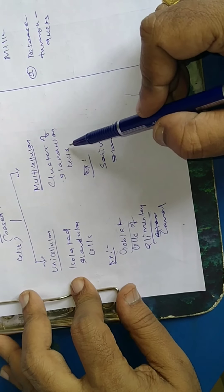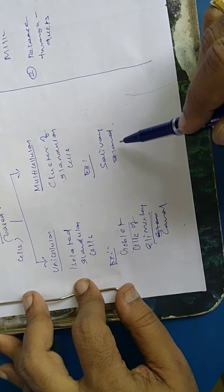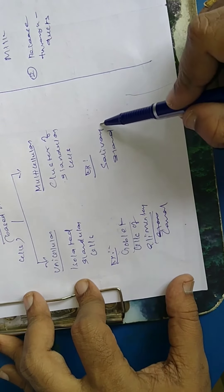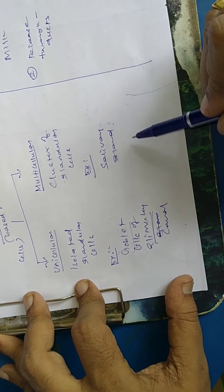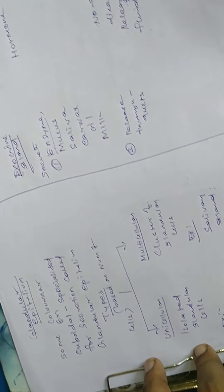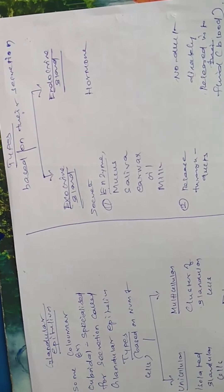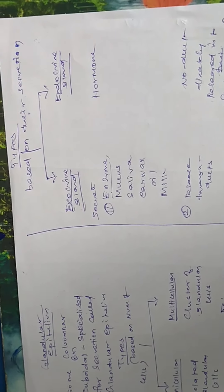Examples of multicellular glandular epithelium: salivary gland, sweat gland, etc. Based on the secretory types, there are two types of glandular epithelium: exocrine gland and endocrine gland.